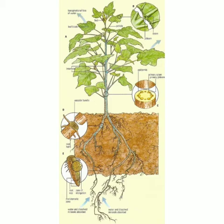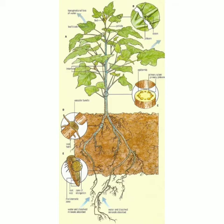Even now, if you go and open the fridge and see if mummy kept coriander leaves, pudina leaves, or even greens, you can see the excess water being thrown out. This process is called transpiration, and the leaf is the main site of transpiration.